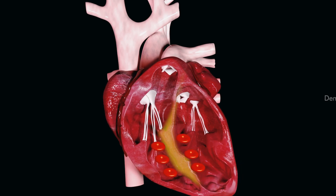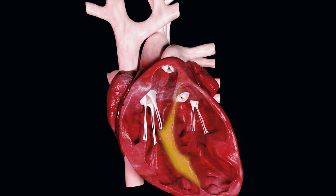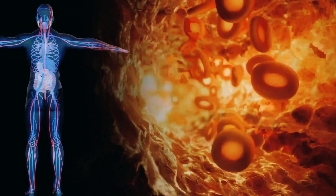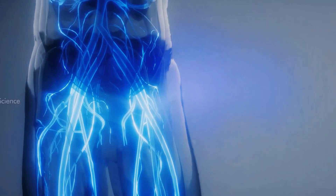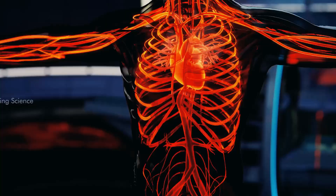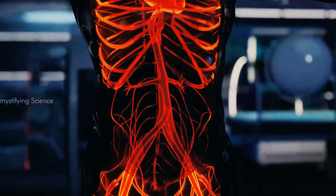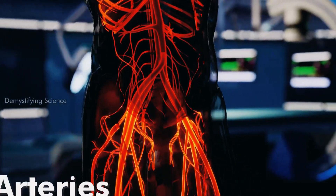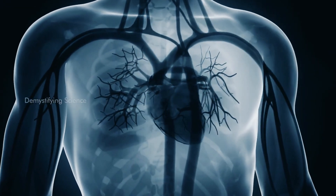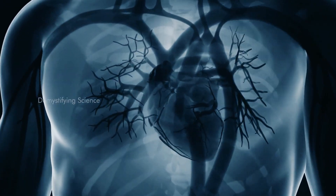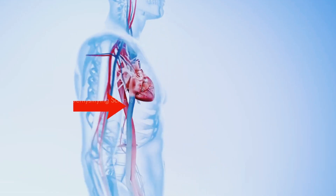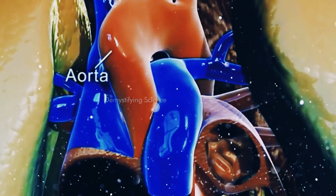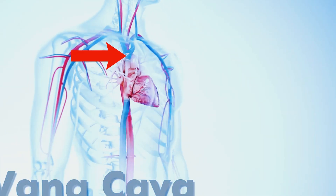Valves of the heart: The heart has four valves that ensure one-way blood flow. The atrioventricular (AV) valves include the tricuspid valve, between the right atrium and right ventricle, and the mitral (bicuspid) valve, between the left atrium and left ventricle. These valves prevent backflow of blood into the atria during ventricular contraction. The semilunar valves include the pulmonary valve, between the right ventricle and pulmonary artery, and the aortic valve, between the left ventricle and aorta. These valves prevent backflow of blood into the ventricles after contraction.